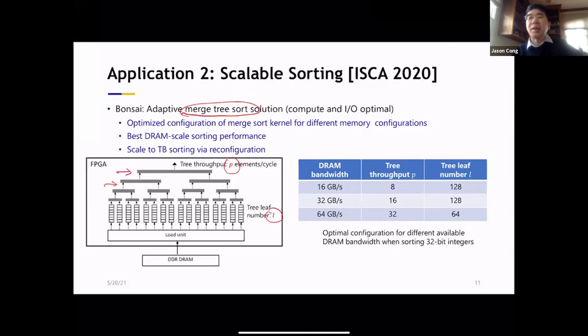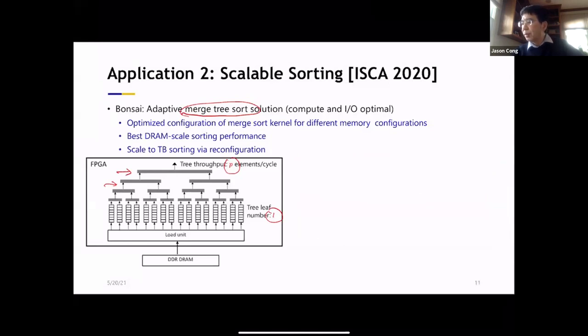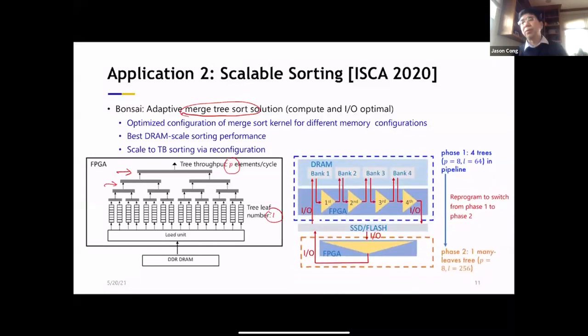So these two become parameters for us. And then depends on the DRAM bandwidth, we can actually customize it. Moreover, you can change your mind because when you sort very large data, you really have two levels. One level is actually sorted into the DRAM size, 64 gigabyte. And then the next level to merge them further to get the terabyte scale sorting. So the IO bandwidth is actually quite different for DRAM vs SSD.